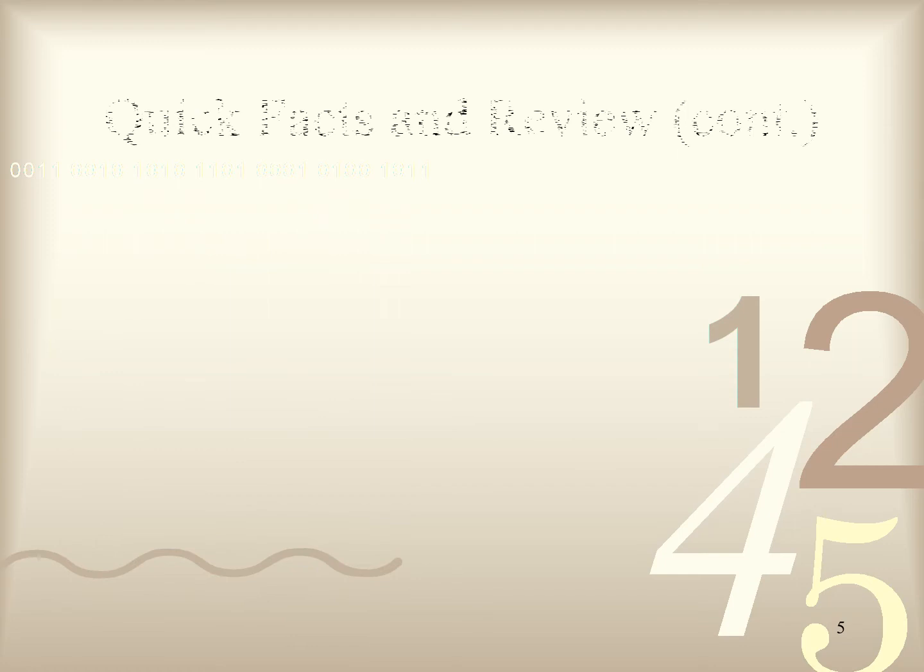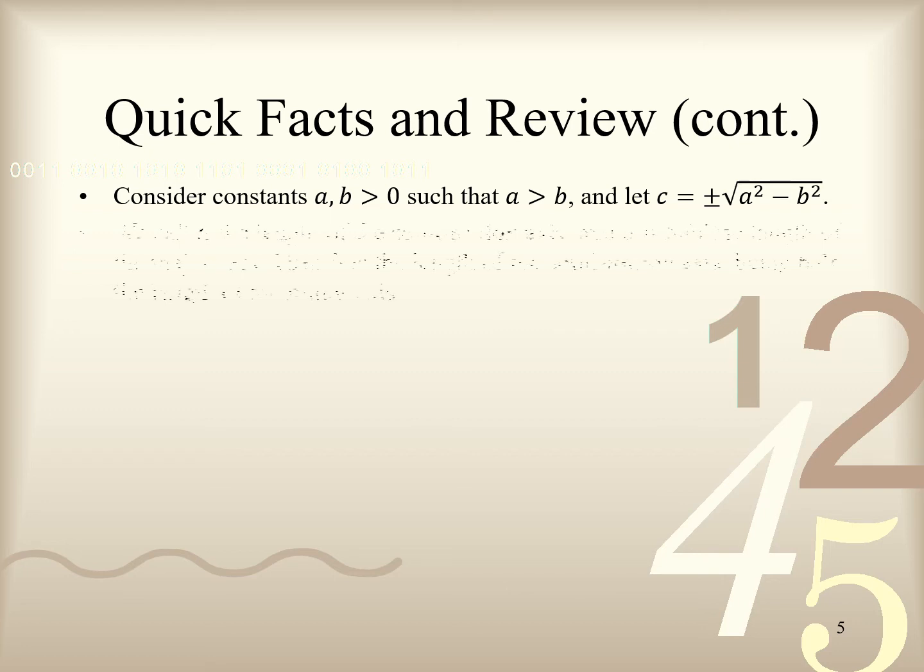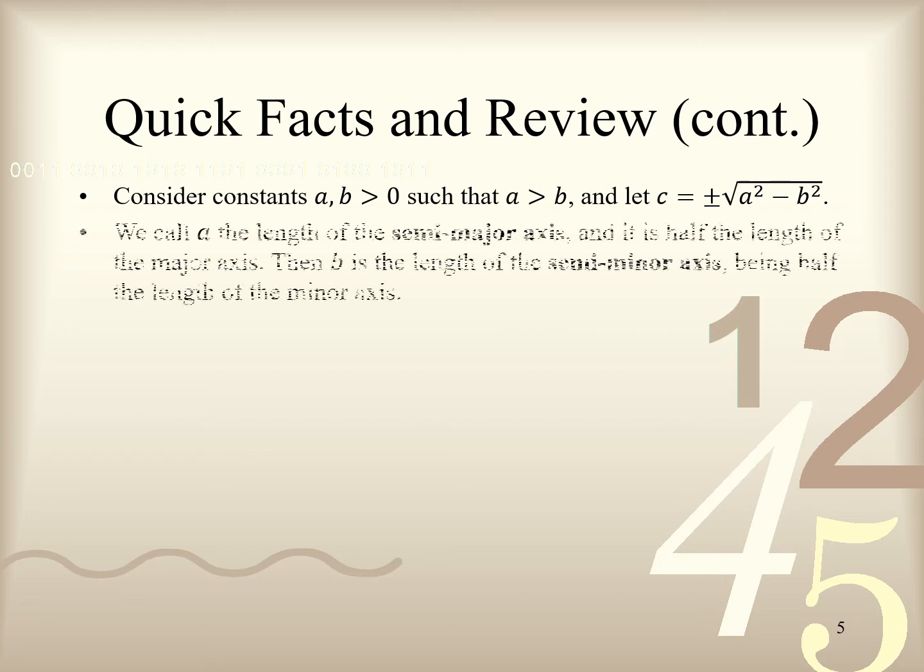We continue with a few more facts and review that we will need. Consider real constants A and B, bigger than 0, such that A is greater than B, and let C equal plus or minus the square root of A² - B². We call A the length of the semi-major axis, which is half the length of the major axis. Then B is the length of the semi-minor axis, which is half the length of the minor axis.